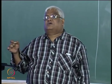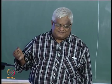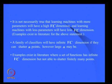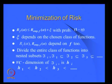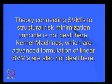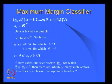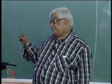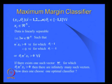These are extremely highly mathematical subjects and I do not want to go into all that mathematics here. The theory connecting SVM to the structural risk minimization principle is not dealt with here. I am directly coming to SVMs — the maximum margin classifier. You have {x_i, theta_i} for i = 1 to n, theta_i ∈ {-1, +1}, x_i ∈ R^n, and I am assuming the data is linearly separable.